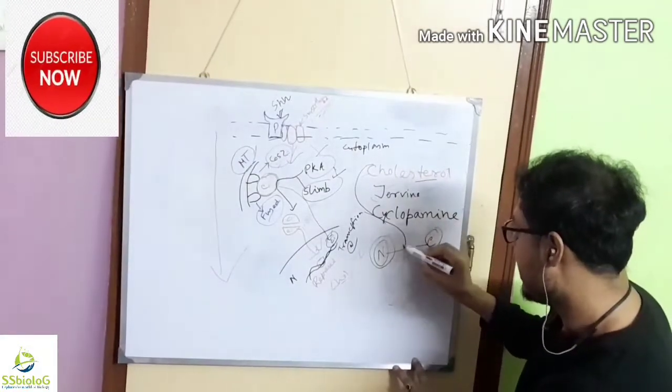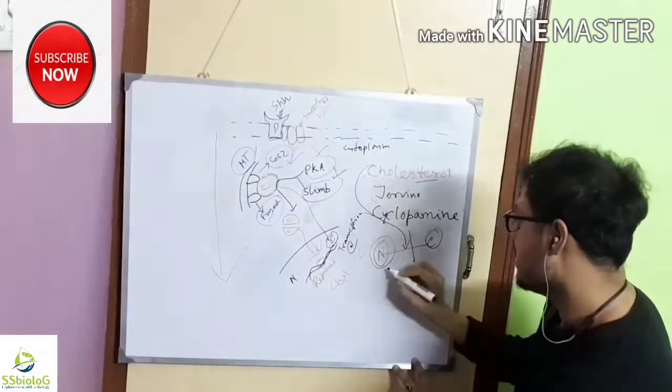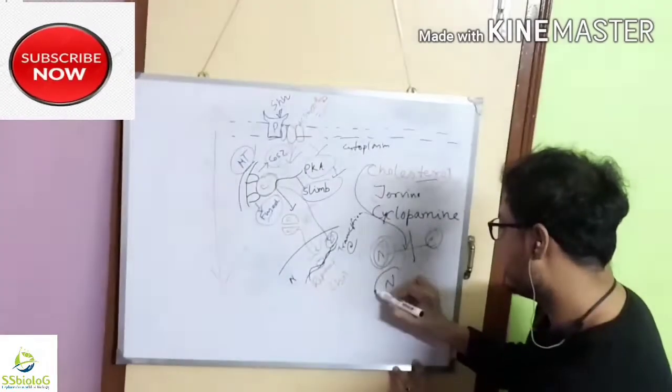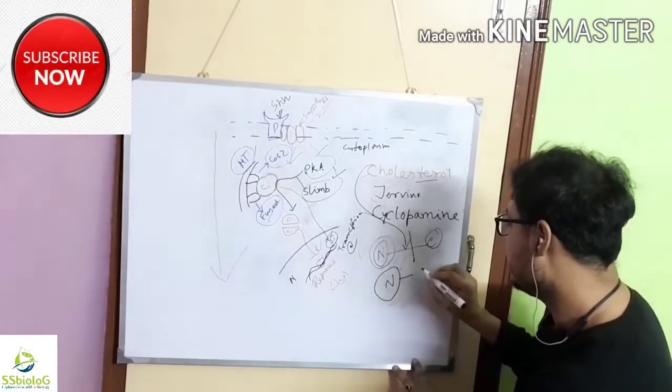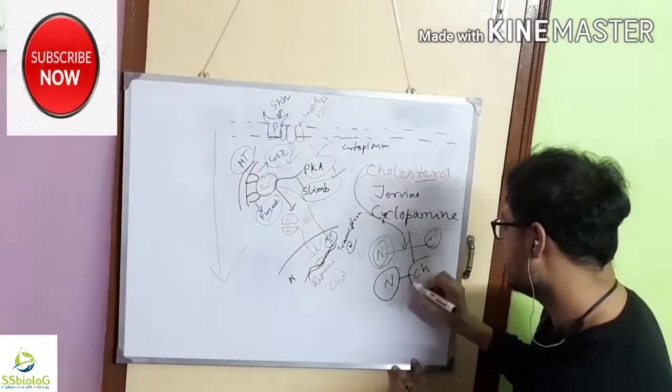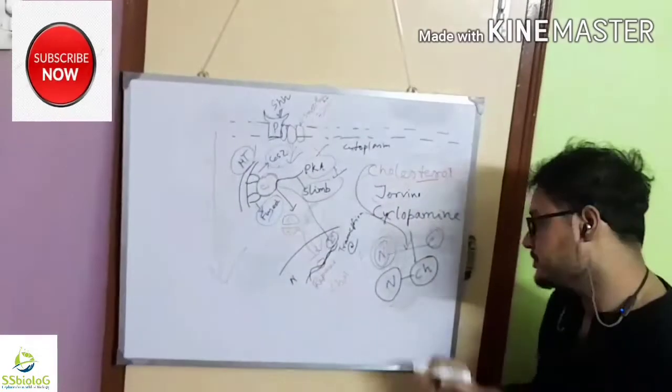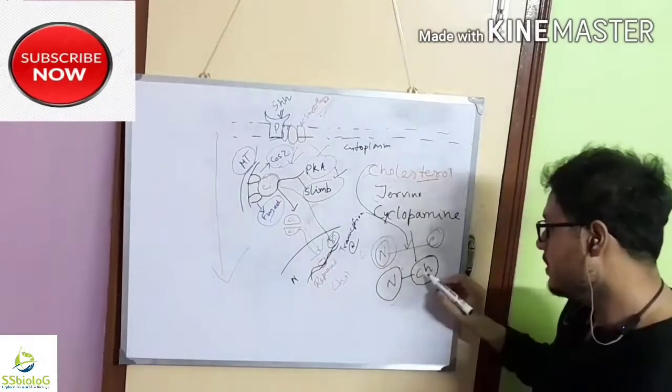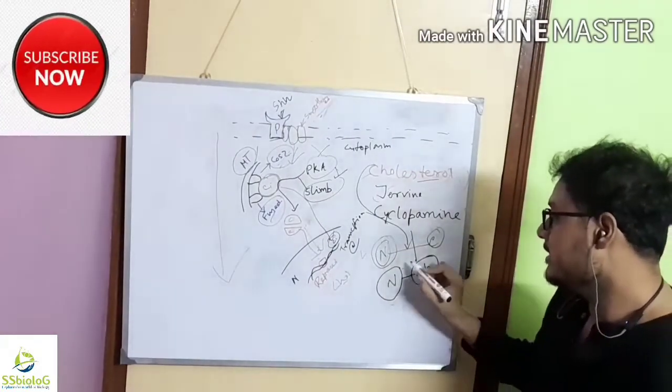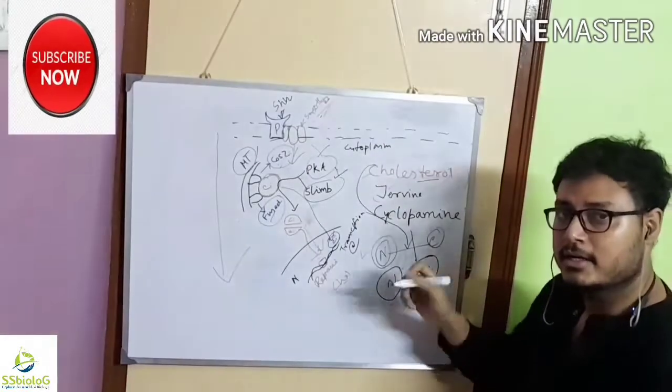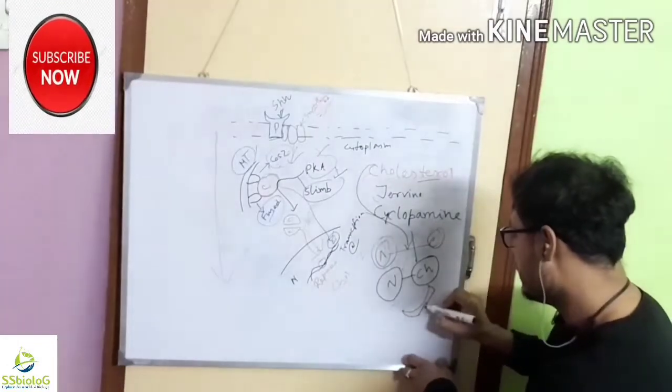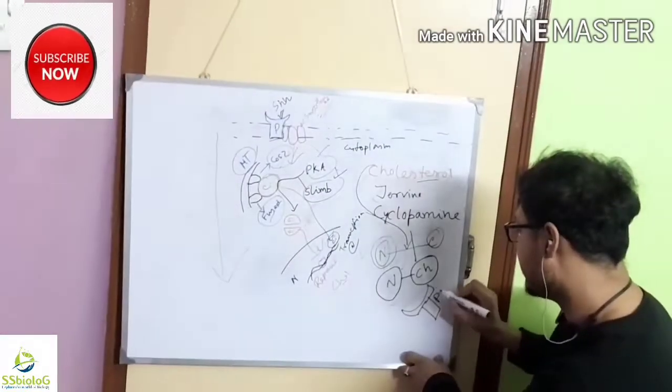Cholesterol comes and gives its protein. It not only cleaves the internal part, but it becomes associated with the active portion and helps the protein to diffuse into the cell. It not only helps the protein diffuse in the cell but also helps it to attach with this Patched receptor.